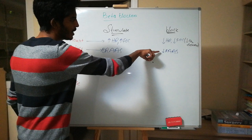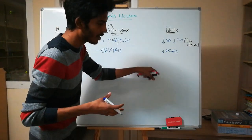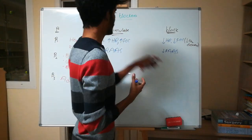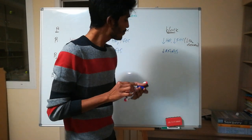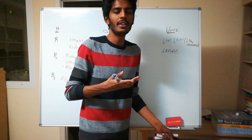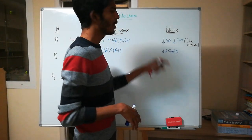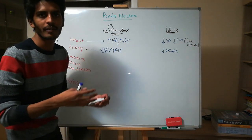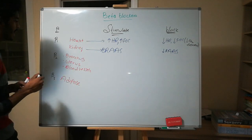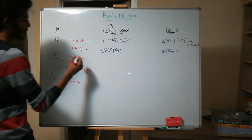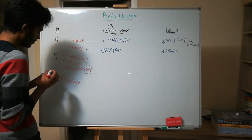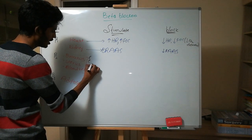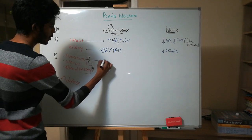Understanding what happens when we stimulate or block a receptor is important — if you know what happens when you block a receptor, it's easy to know when to use the drug. For example, you use it when you want to decrease heart rate. Now let's see beta 2: in the bronchus, stimulation will cause relaxation — bronchodilation.